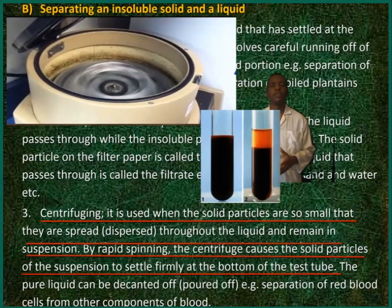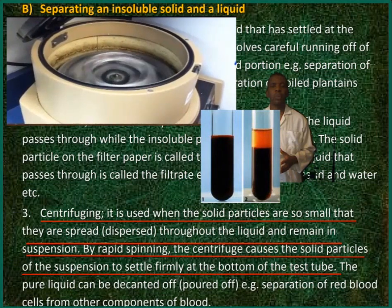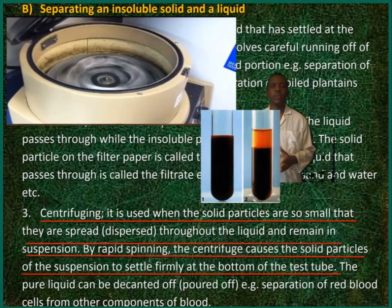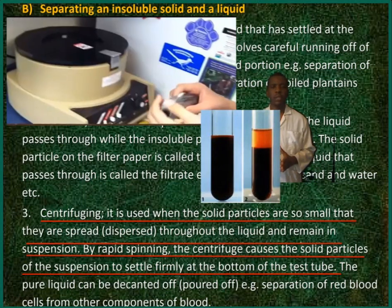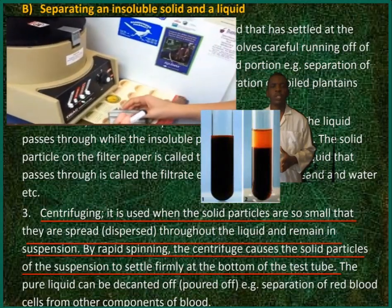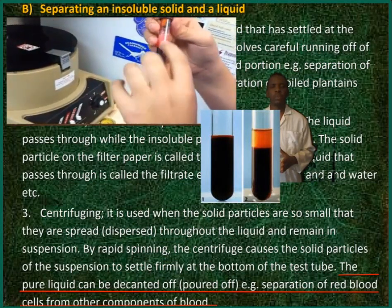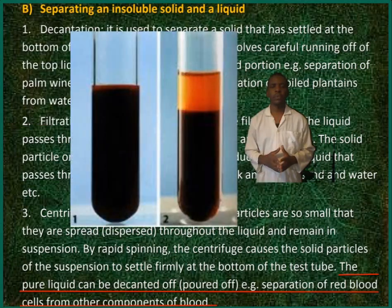Method 3: Centrifuging. It is used when the solid particles are so small that they spread throughout the liquid and remain in suspension. By rapid spinning, the centrifuge causes the solid particles of the suspension to settle firmly at the bottom of the test tube. The pure liquid can then be decanted off. Example: separation of red blood cells from other components of blood.